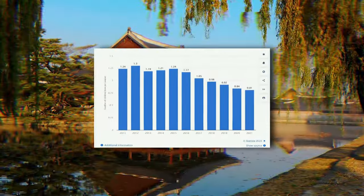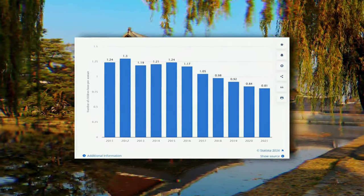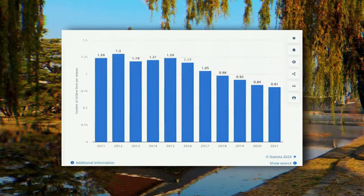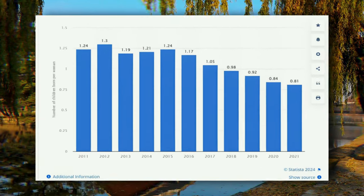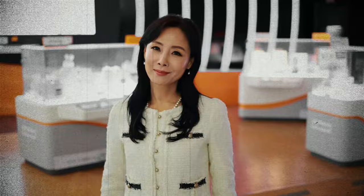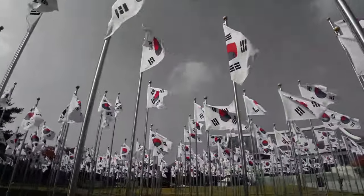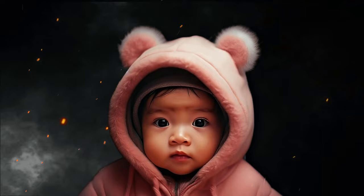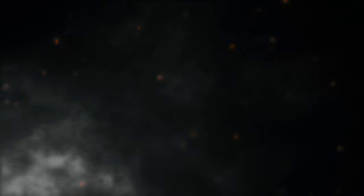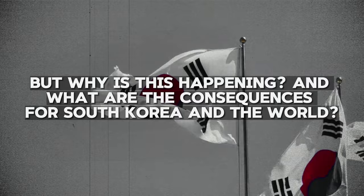In 2020, South Korea's total fertility rate — or the average number of children a woman has in her lifetime — fell to a record low of 0.78. That's less than half of the replacement level of 2.1, which is needed to maintain a stable population. It also means that most couples in South Korea are having only one child, or none at all. But why is this happening, and what are the consequences for South Korea and the world?